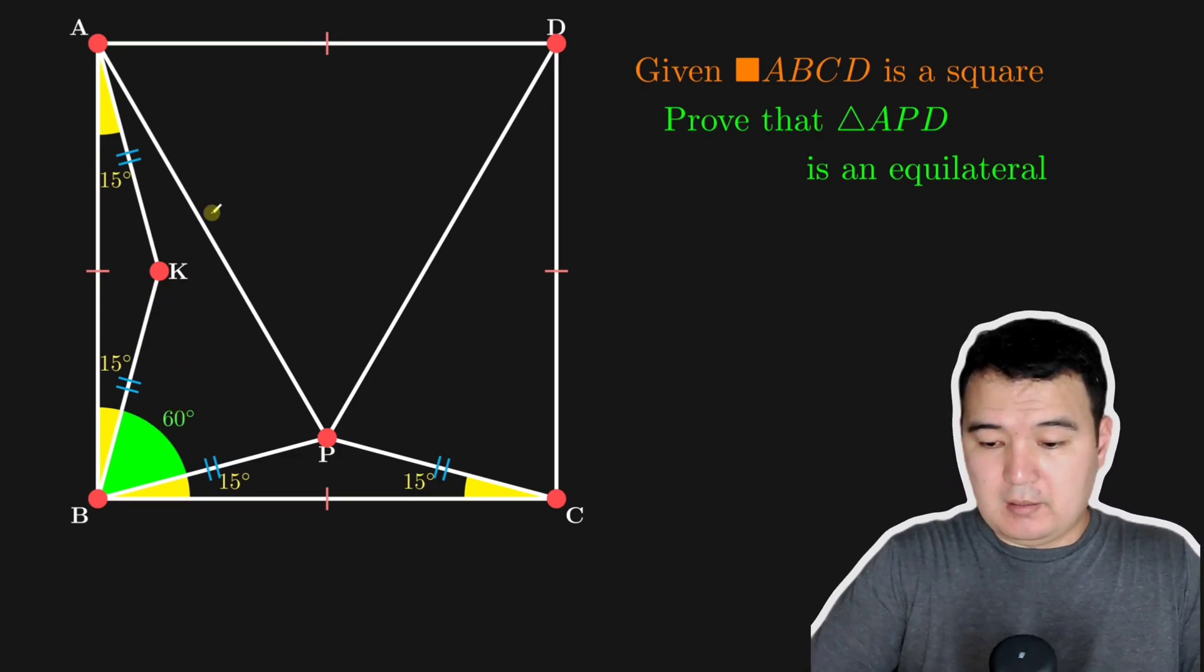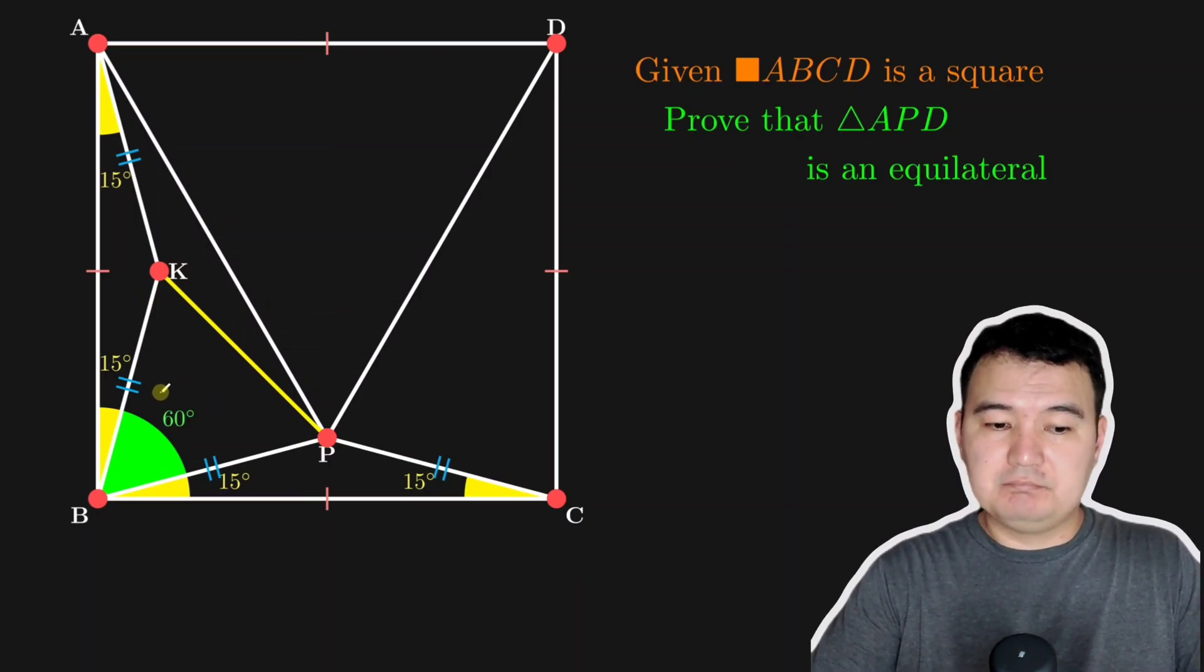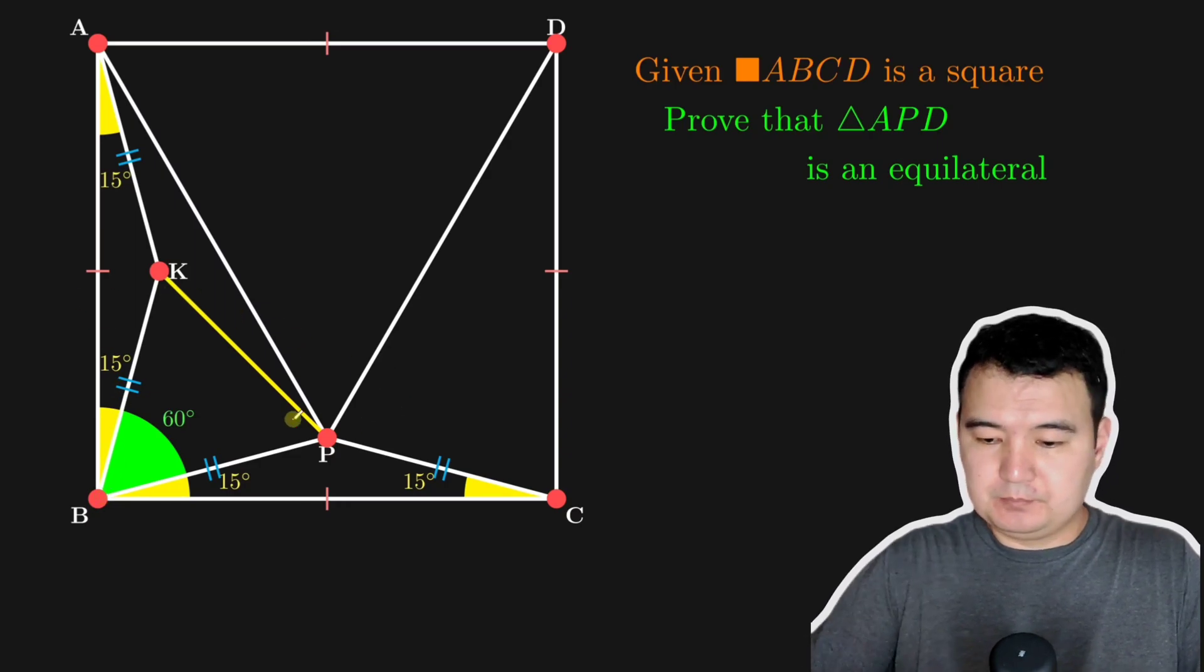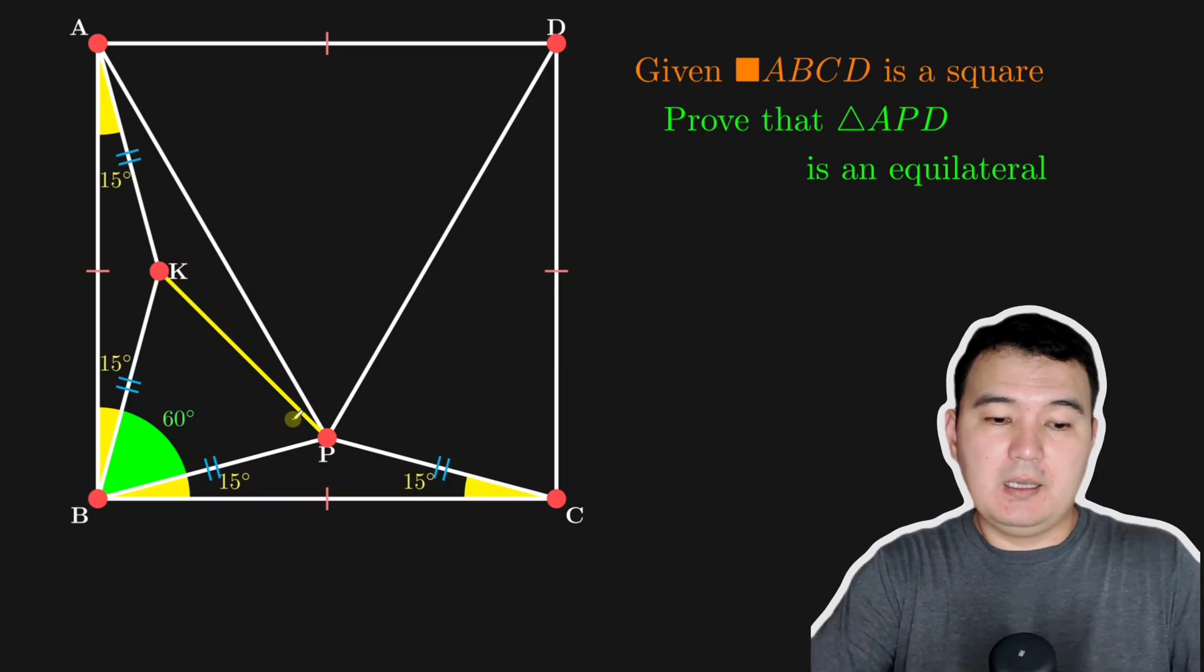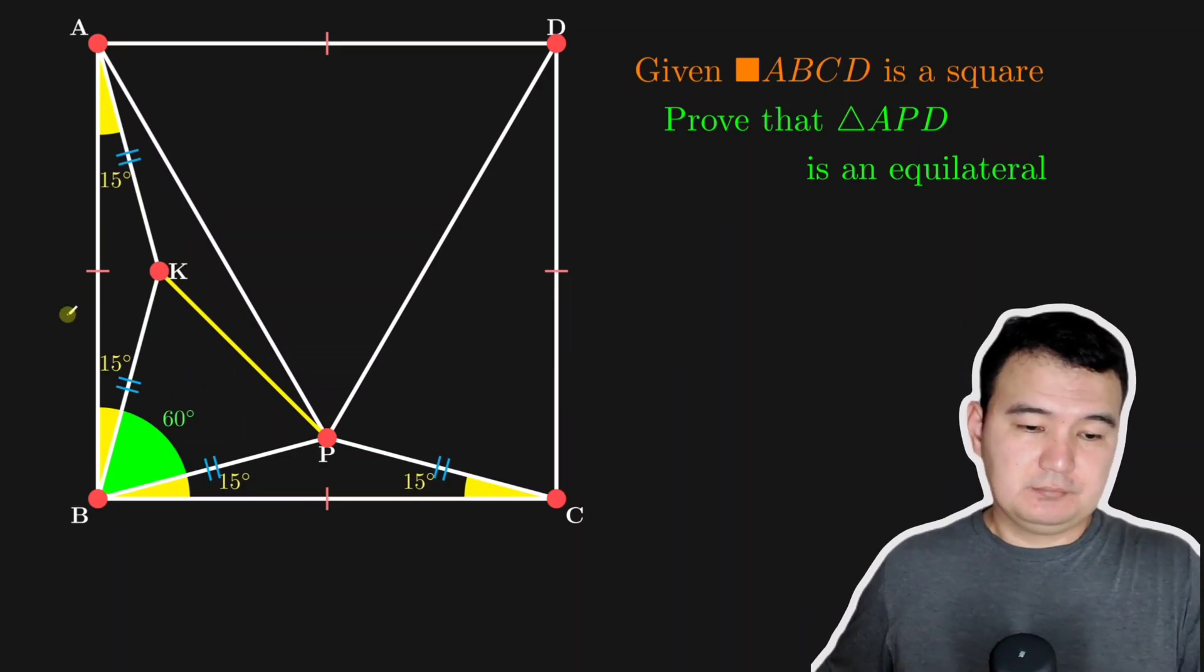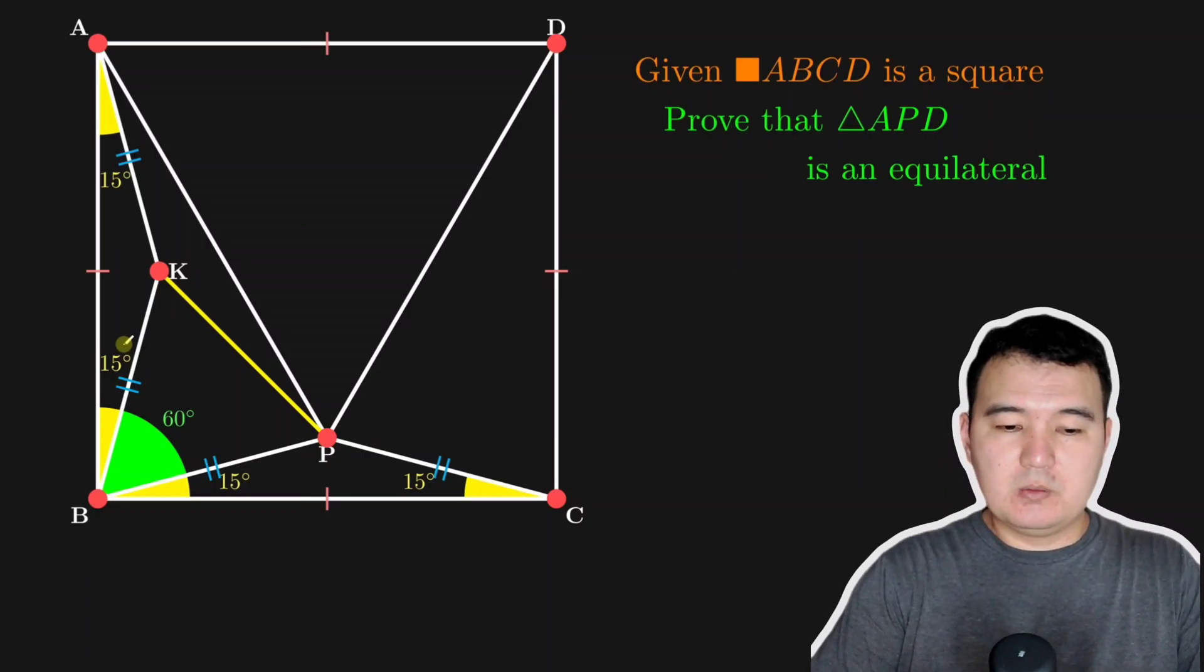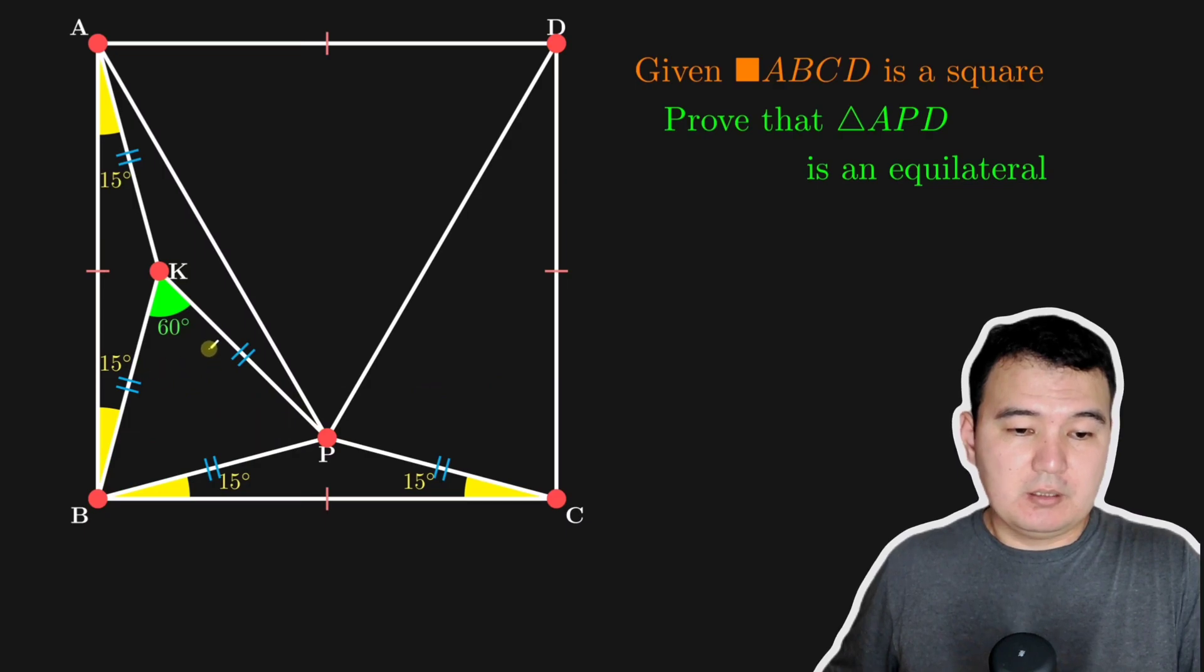And then what happens if you connect this to K and P? Try to compute the side angles of B, K, P. So these are all 60 because we have 60 here and it's an isosceles triangle. So the other two angles should be equal. And that's 60 and 60. So we have equilateral triangle over here.